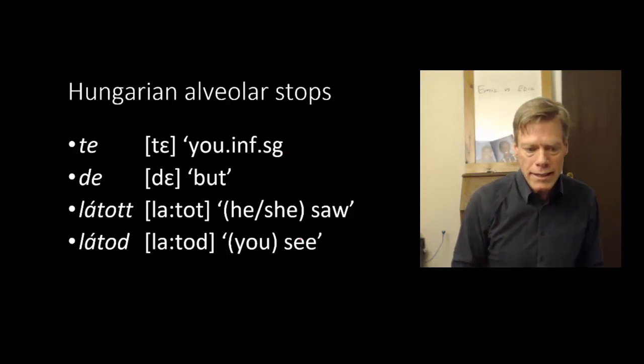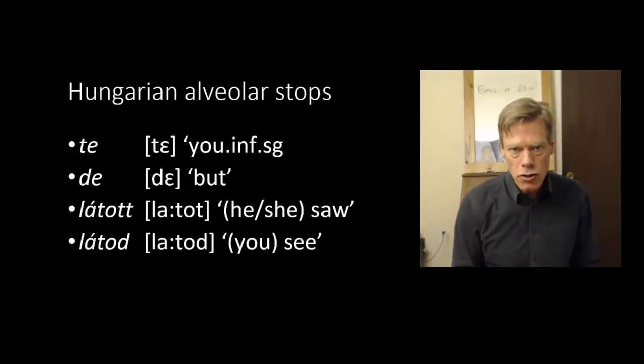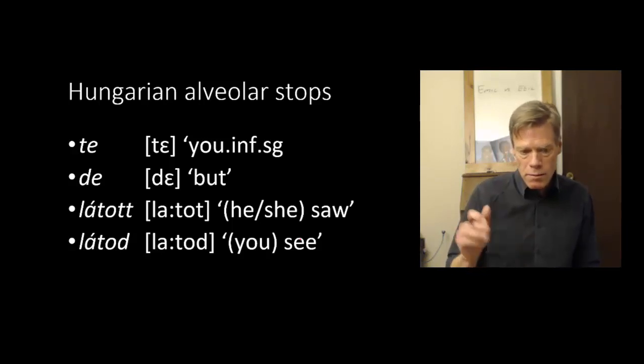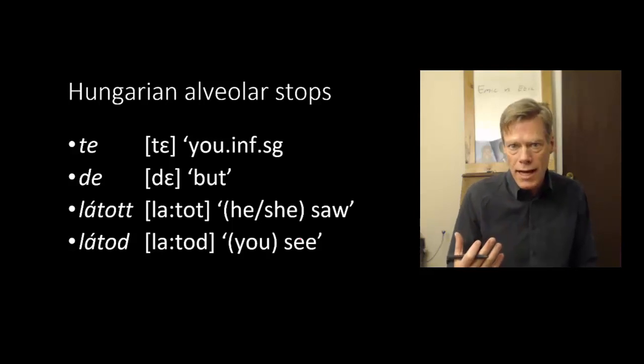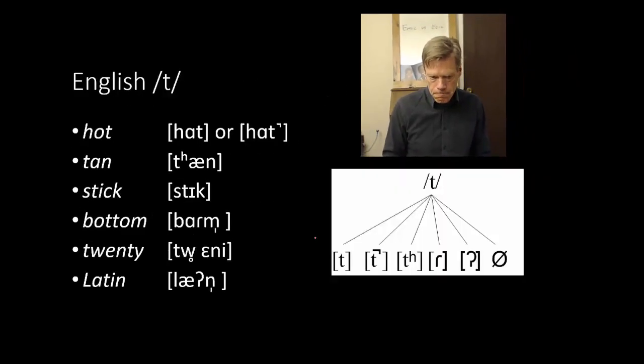Now I want to look at Hungarian. So Hungarian, again, has a contrast between T's and D's. So we've got te, which means you in formal singular, and de, which means but. Or látdod, which means he or she saw, versus látod, which means you see. Now, so we know that there's a contrast between T and D, but there are no aspirated T's in Hungarian. And that's what I want to get at: there's only one way to pronounce a T in Hungarian, and that is to have a just normal released T. Te, or látod.